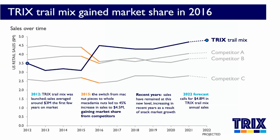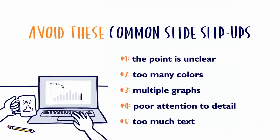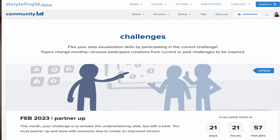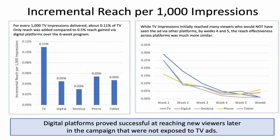That works great for a live setting. For the scenario where I'm sending something around, I would annotate those important points directly on the graph. There you have it — five common slide slip-ups and how to avoid them. I invite you to put what you've learned here into practice. If you're watching this in February 2023, the current Storytelling with Data challenge is to redesign a slide — we give you a real-world example and you get to work your magic and share it with the Storytelling with Data community. If you're watching after that, you can browse how others approached it.